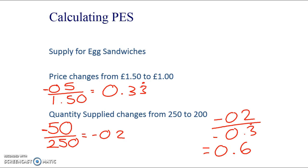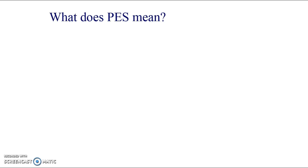A little note: because supply curves are upward sloping, PES should always come out as a positive number. Occasionally it can come out as a negative number when supply has been particularly slow to respond, but normally it should always be positive.